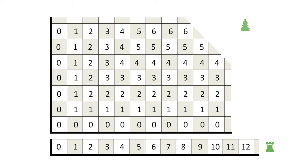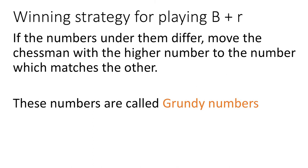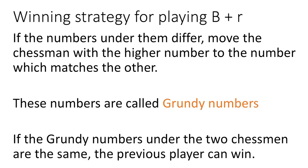These location numbers are called the Grundy numbers, after the early 20th century mathematician, P. M. Grundy. The winning strategy for playing B plus R is to match their Grundy numbers, unless they are already equal, in which case you cannot win unless your opponent makes an error.